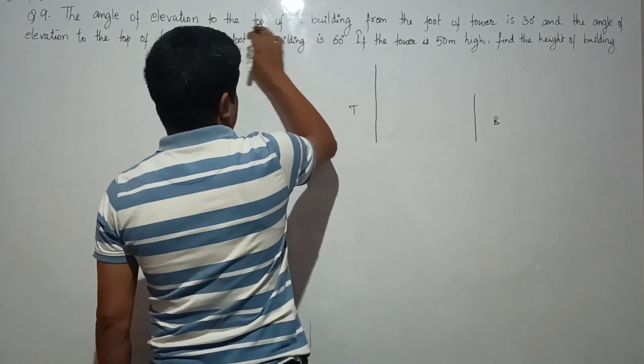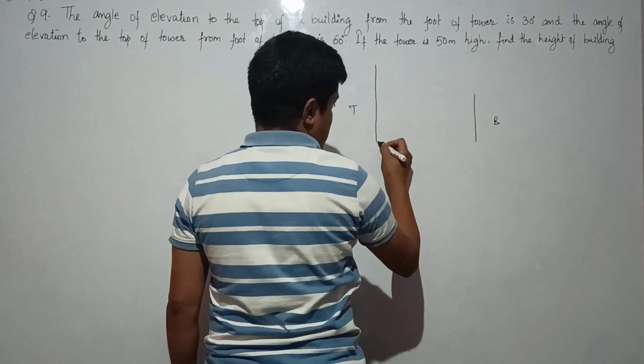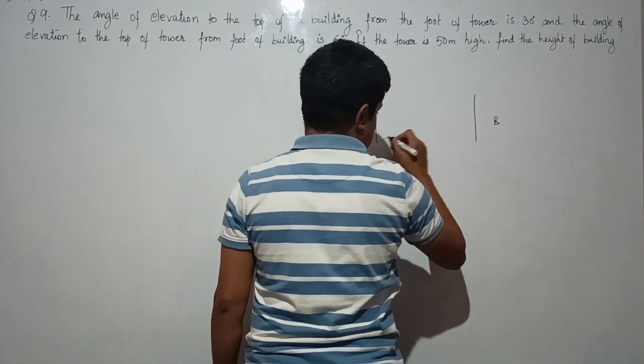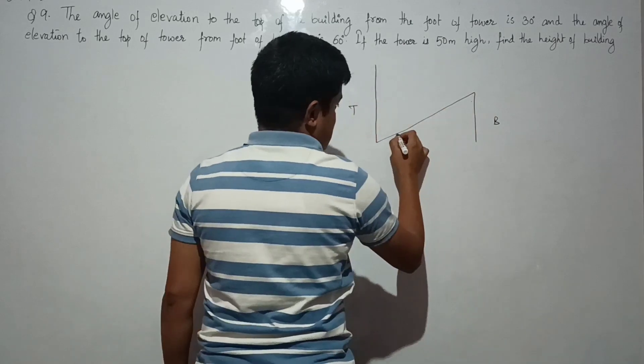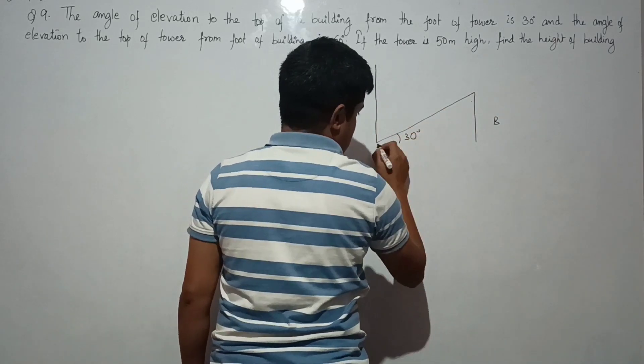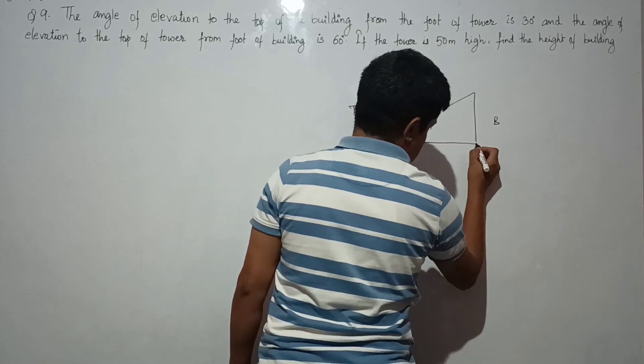To the top of building from the foot of the tower, the angle of elevation is 30 degrees. So this is 30 degrees. Let us make the base also. And the angle of elevation to the top of tower